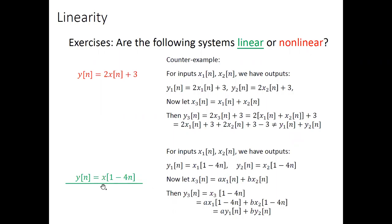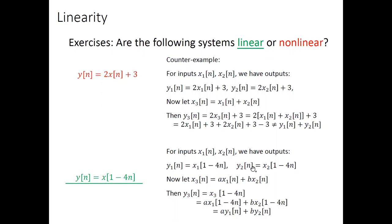For the next example, y[n] = x[1 − 4n]. This is a time-scaled and reflected version of x. For this kind of operation, the system is in general linear, which can be verified through the definition. y1 = x1[1−4n] and y2 = x2[1−4n]. Constructing a new input x3 = a·x1 + b·x2, we get y3 = a·x1[1−4n] + b·x2[1−4n]. The first and second terms correspond to a·y1 and b·y2 respectively, which is exactly what the definition requires for linearity.